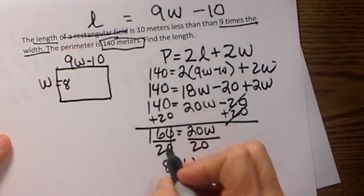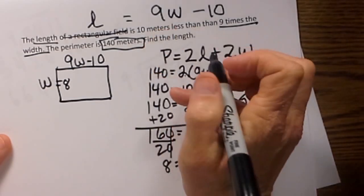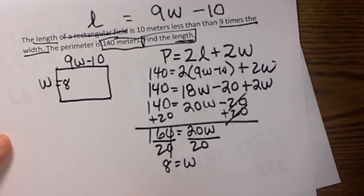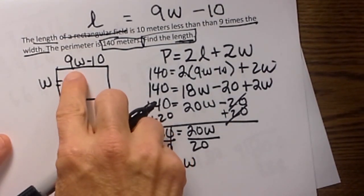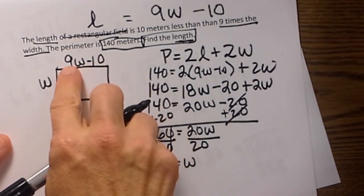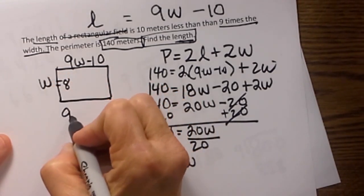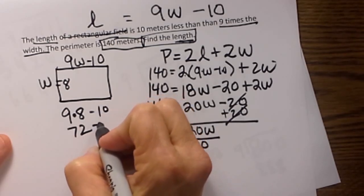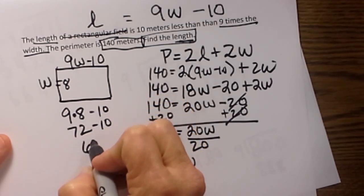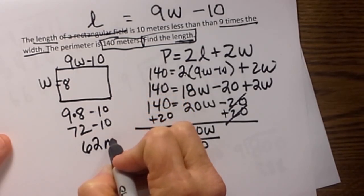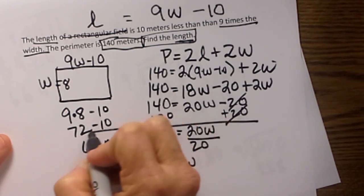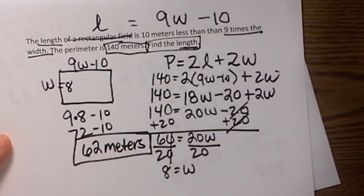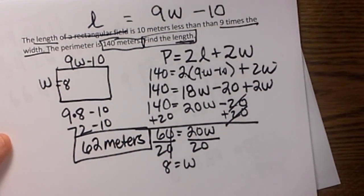So our width is 8 and then we need to know our length though. Notice the question asks us to find the length. The length is 10 less than 9 times. So 9 times 8 is 72. Then we have to do 10 less than that so that makes it 62. Remember this is a word problem so we want to add our units. This was all given to us in meters so we have to add meters. That is how you would find the length.